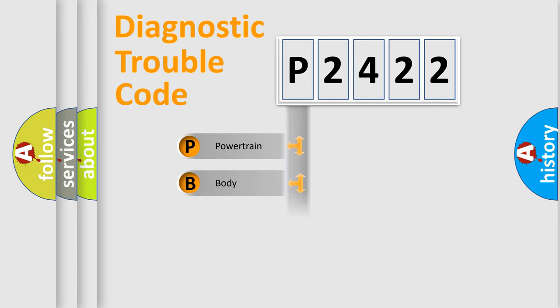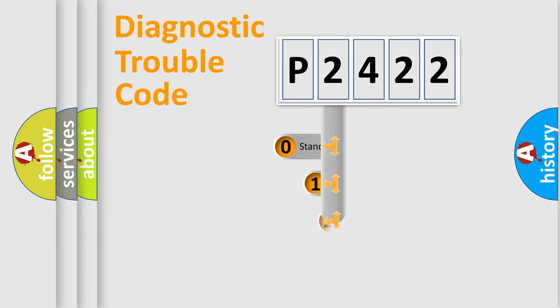Powertrain, body, chassis, and network. This distribution is defined in the first character code.